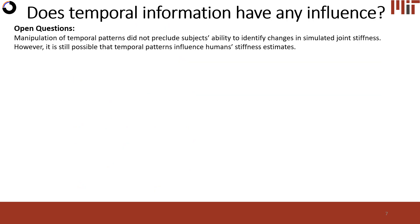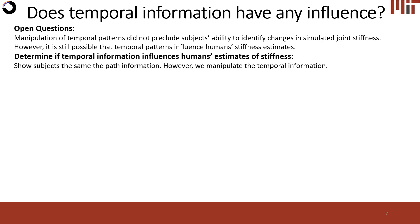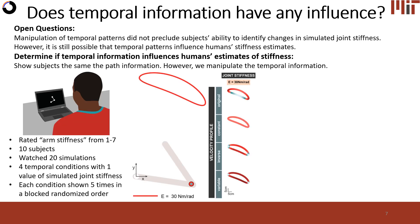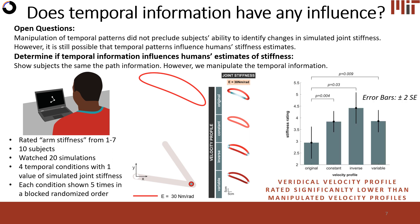In the previous set of visual perception of stiffness conditions, we found that manipulation of temporal patterns did not preclude subjects' ability to identify changes in simulated joint stiffnesses. However, it is still possible that temporal patterns do influence humans' stiffness estimates, so we set out to test this. To determine if temporal information influences humans' estimates of stiffness, we ran new simulations where subjects viewed the same path information but with manipulated temporal information. Specifically, subjects watched 20 simulations consisting of four different temporal patterns with the same path, and we found that subjects rated the natural velocity profiles significantly lower than the manipulated velocity profiles.